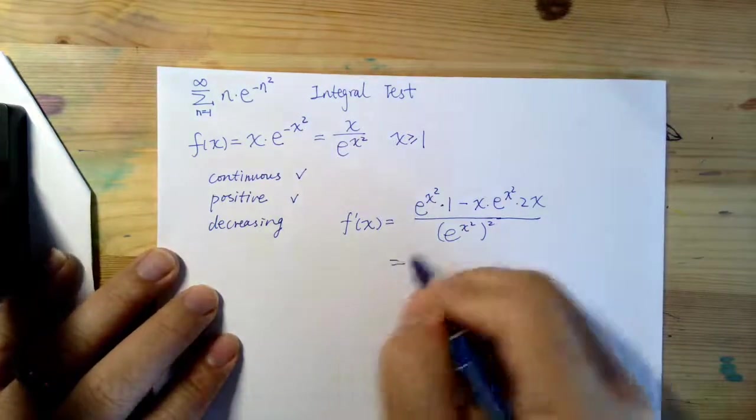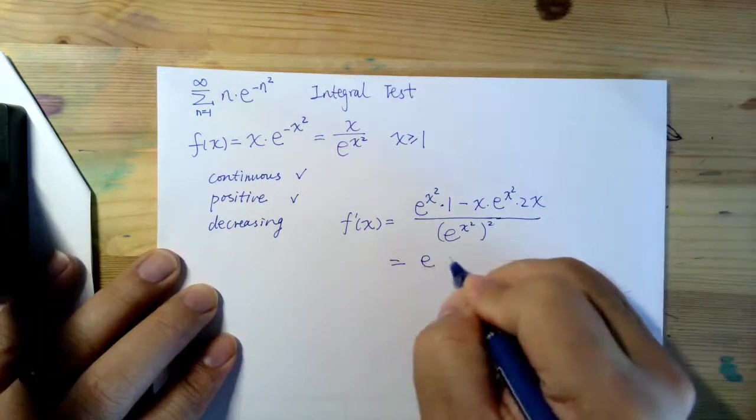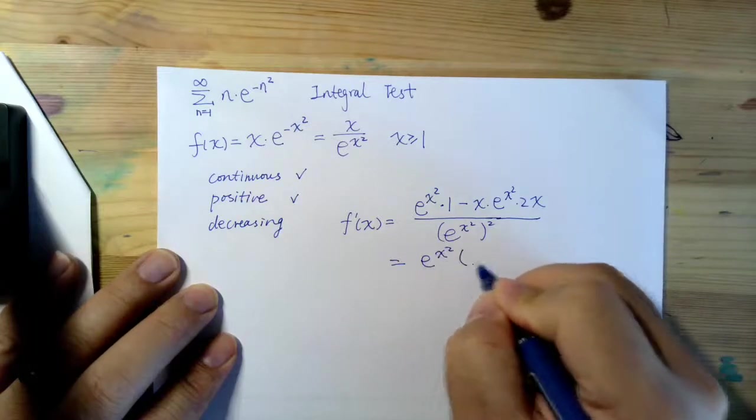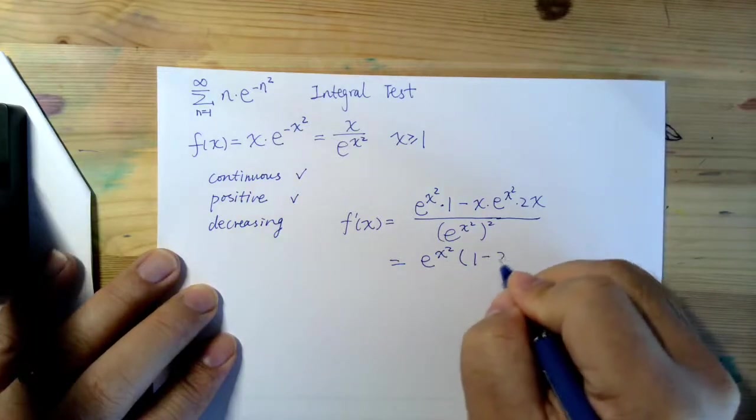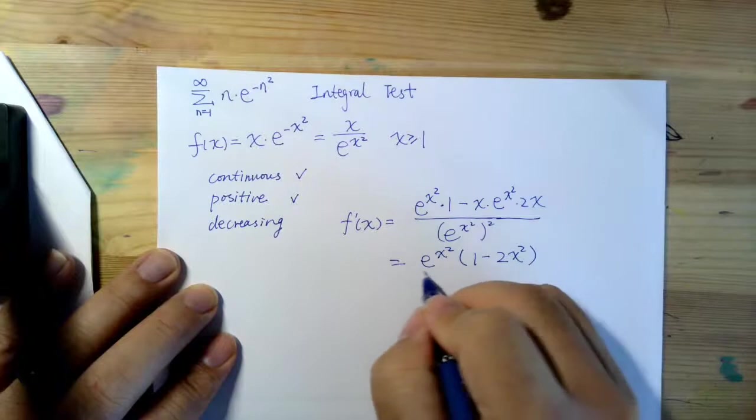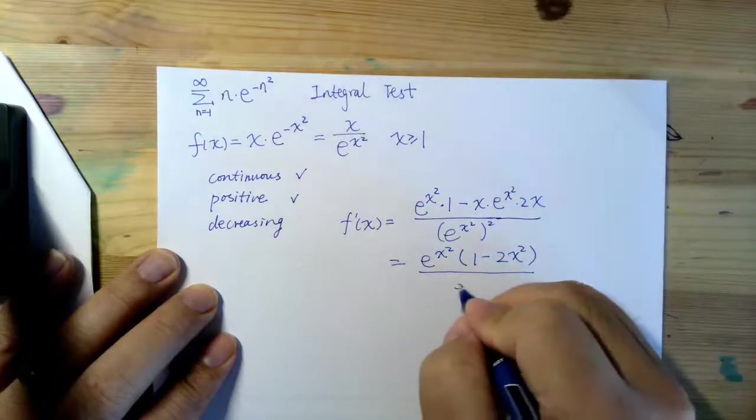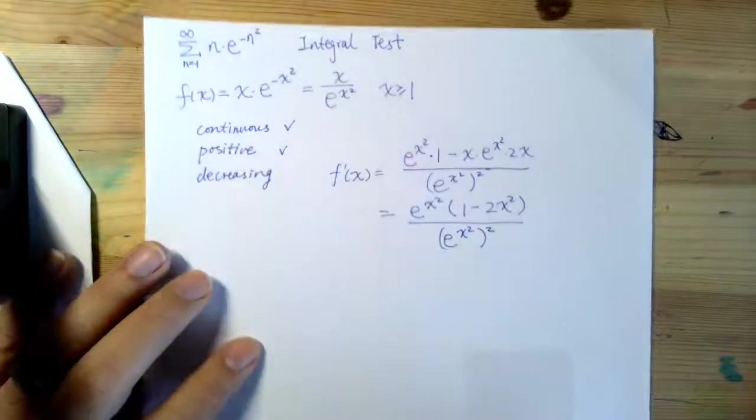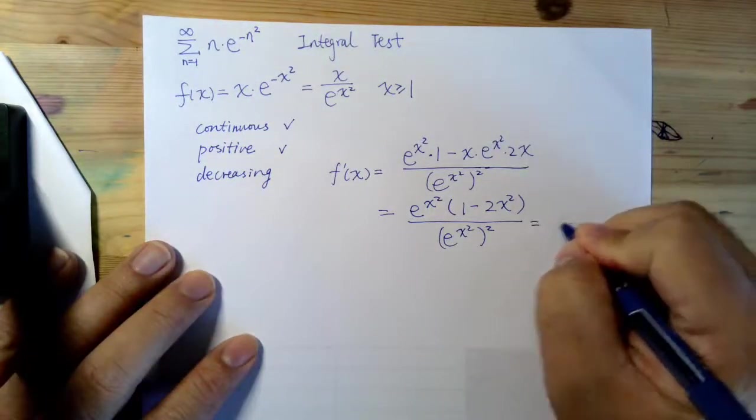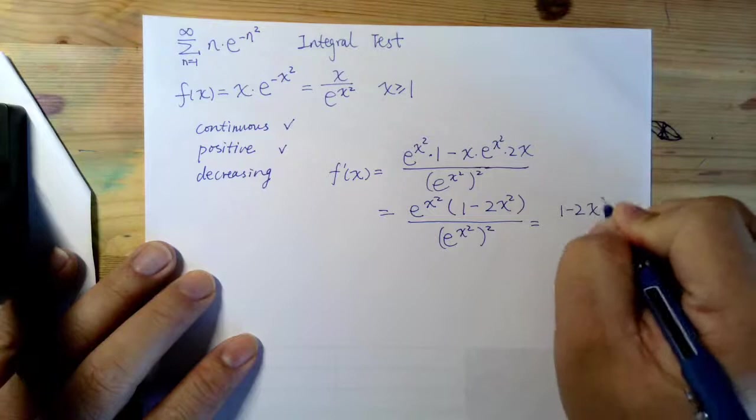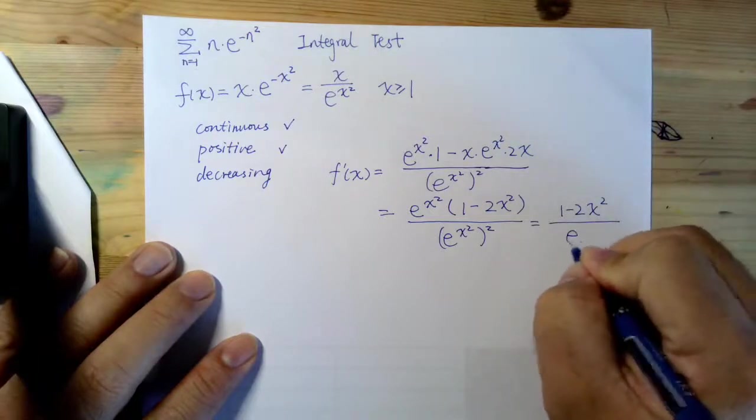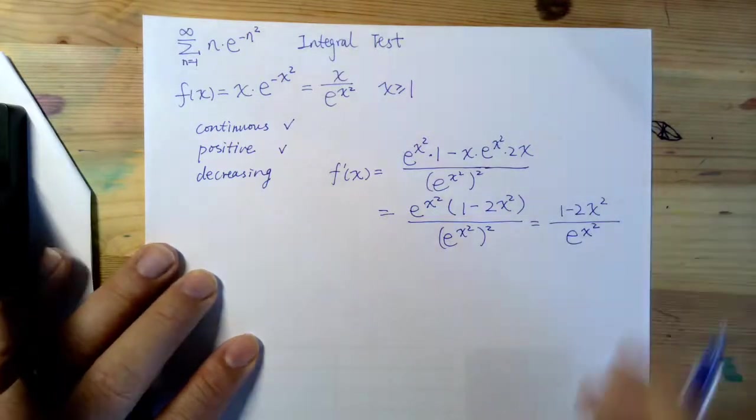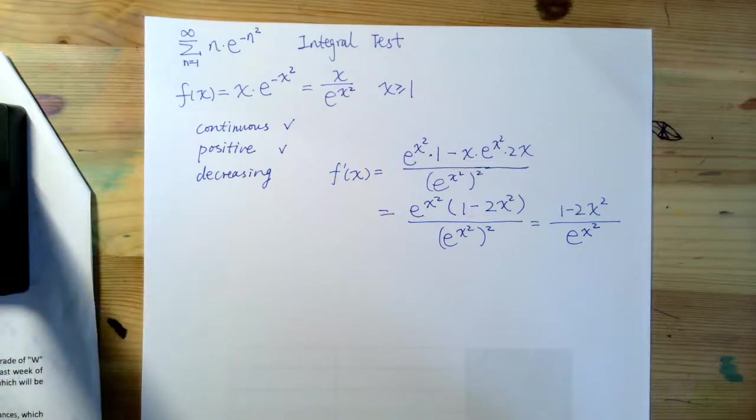So it turns out what I have here is e to the power of x squared times 1 minus 2x squared over e to the power of x squared squared. Of course, you can even simplify a little bit more. So, it's going to be 1 minus 2x squared over e to the power of x squared.